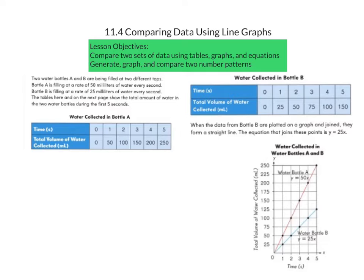We can see our table for bottle A and our table for bottle B. Our table for bottle A shows that after one second it's collected 50 mL of water. After two seconds, it's collected 100 mL, and after three seconds it had collected 150 mL. The equation that would represent this table would be Y equals 50X, because for each second that we add, we multiply that by 50.